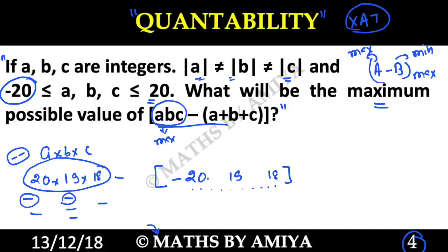So what I got is minus 20 into minus 19 into 18 minus of minus 20 minus 19 plus 18. Because I had to minimize this with two minus signs. If I calculate this now...